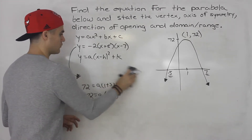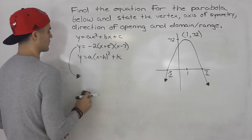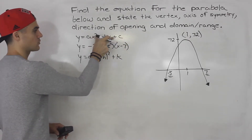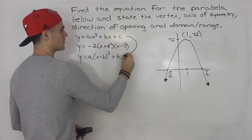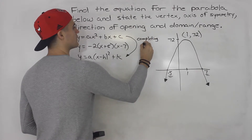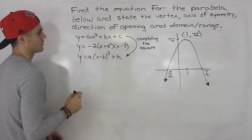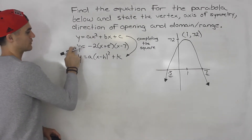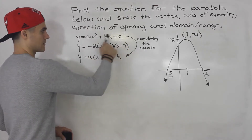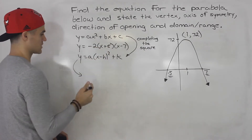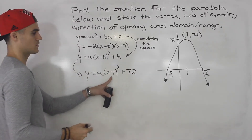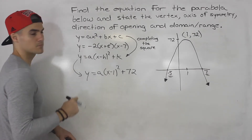What if we wanted to get the vertex form equation? We could expand the factored form, put it into standard form, and then complete the square to go from standard form to vertex form — we'll be doing more of that in future sections. Or, because we're already given the vertex (1, 72), we could just plug that in directly: a(x minus 1) squared plus 72. From here we can read off the vertex as (1, 72). To solve for the a value, we need to pick a point other than the vertex.